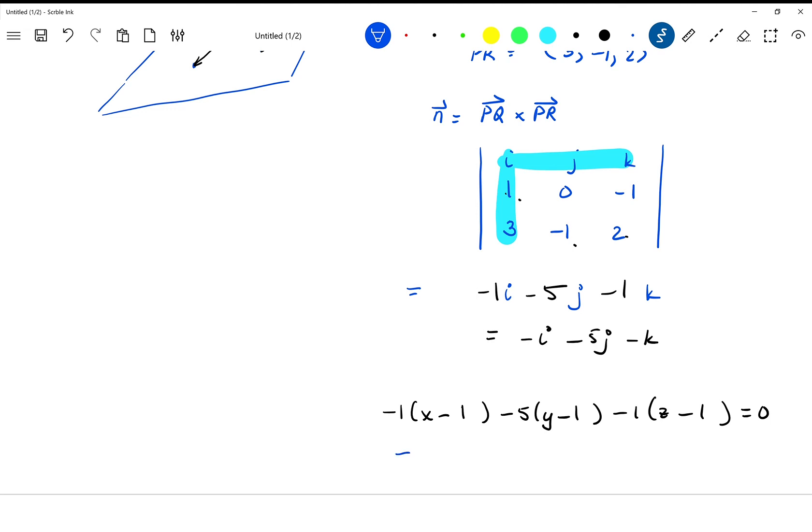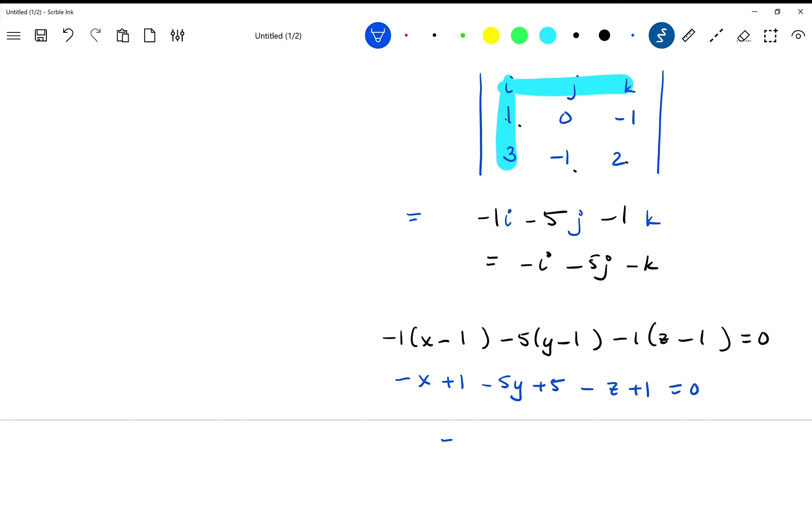And what I'm going to do is I'm just going to multiply this out. So I'm going to have negative x plus one minus five y plus five minus z plus one equals zero. And what that looks like to me is I'm going to end up with negative x minus five y minus z. And one plus five plus one is seven, so that's negative seven on the right. And you know, all the terms are negative, so I'm just going to go ahead and write this as this equation here.